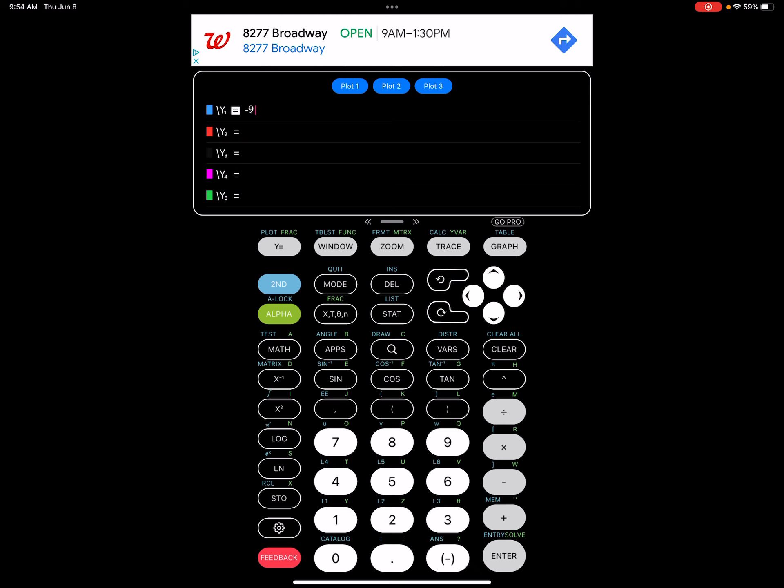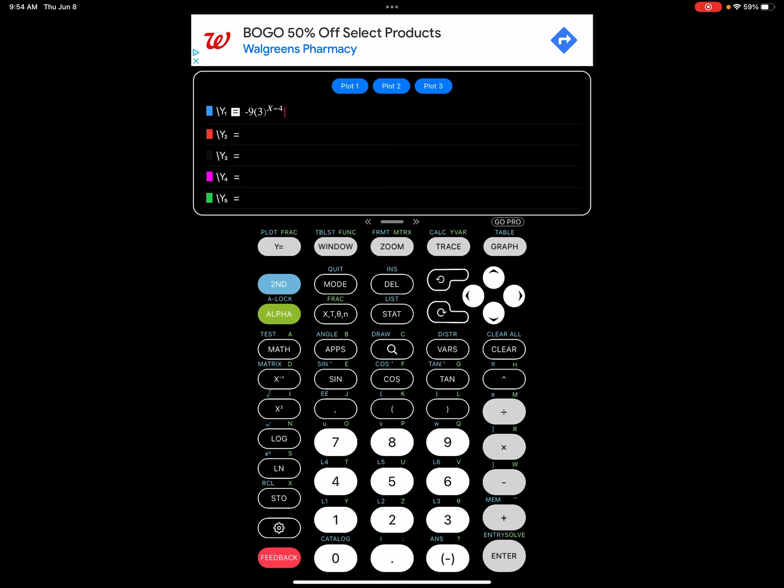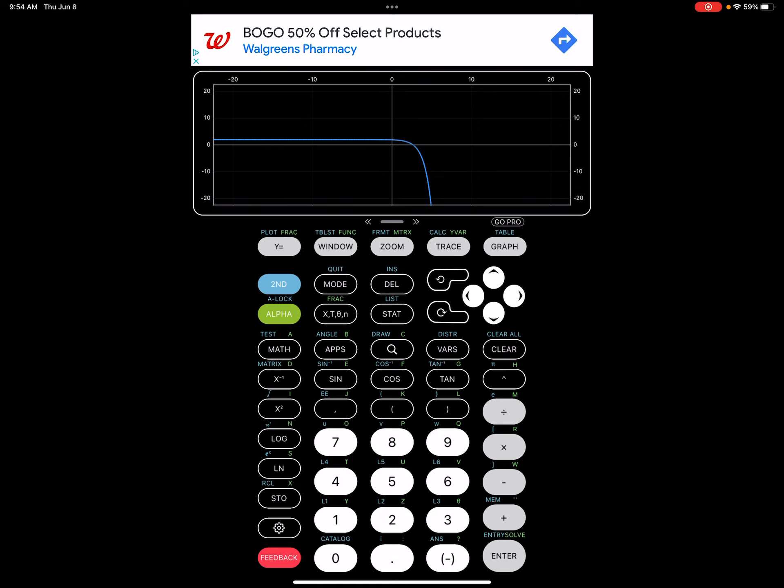So we got y equals, I'm just going to type it so you can see how I put this in the calculator. So it's y equals negative 9 parentheses 3, and then you're going to raise it to the power. So you press caret x minus 4, and then you press the right arrow to get out, and then plus 2. Then when you press graph, you're going to see what it looks like. It's a curve.